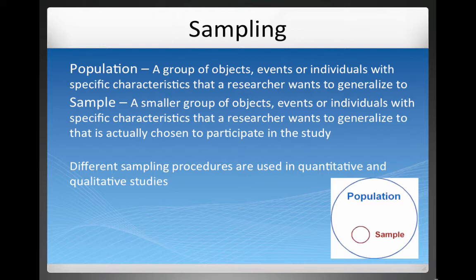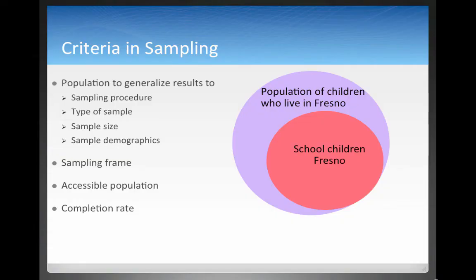There are quite a few different sampling procedures used in quantitative and qualitative studies. What you would like to do is have your sample generalize to the population. It really matters what kind of sampling procedure you use, what type of sample you select, your sample size, and also your sample demographics.